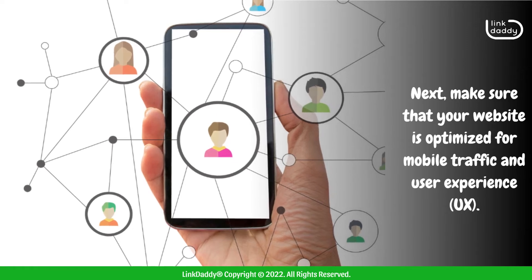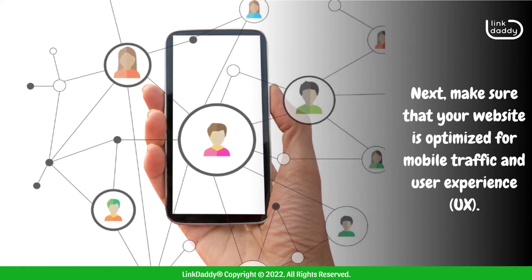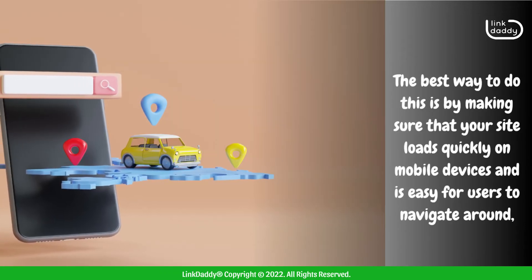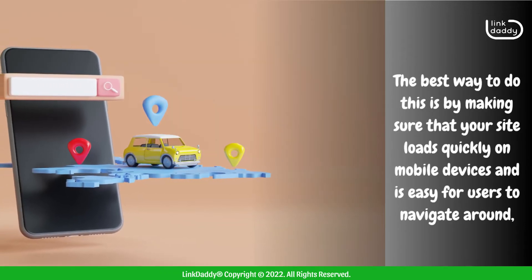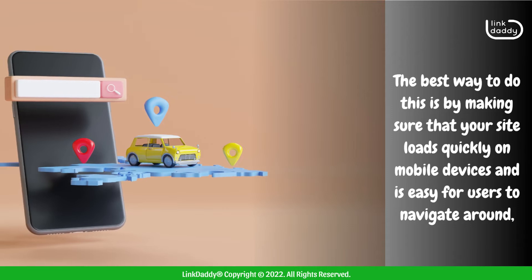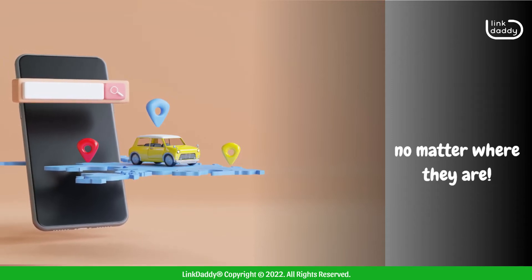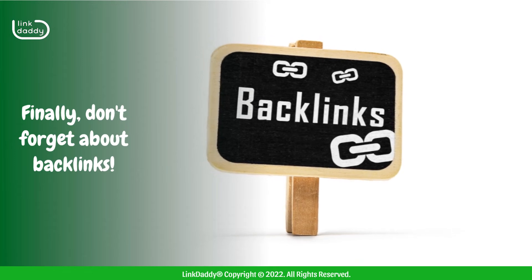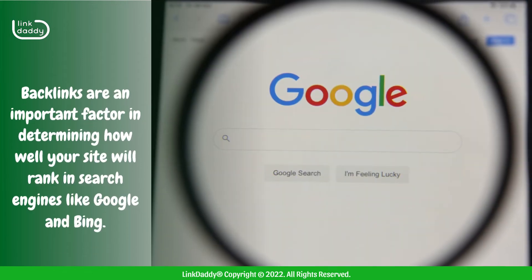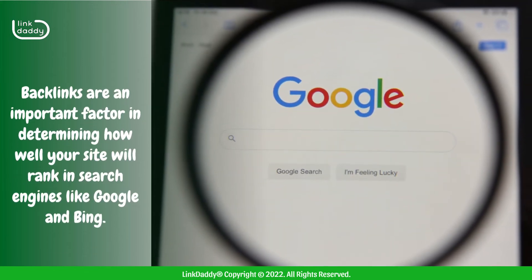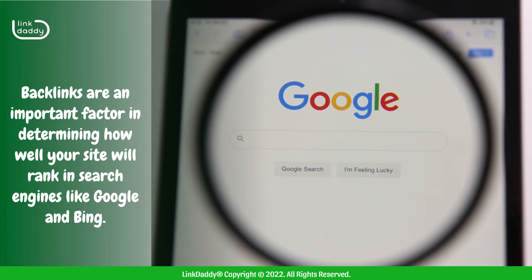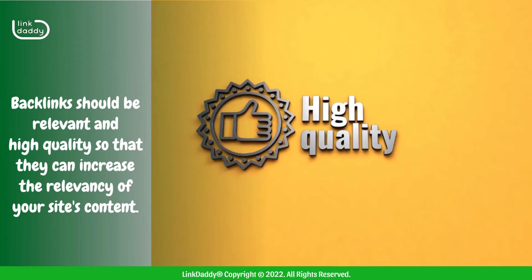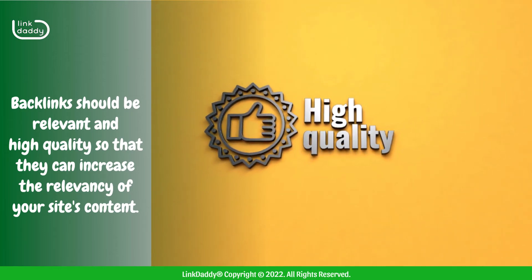Next, make sure that your website is optimized for mobile traffic and user experience. The best way to do this is by making sure that your site loads quickly on mobile devices and is easy for users to navigate around, no matter where they are. Finally, don't forget about backlinks. Backlinks are an important factor in determining how well your site will rank in search engines like Google and Bing, and they should be relevant and high quality so that they can increase the relevancy of your site's content.